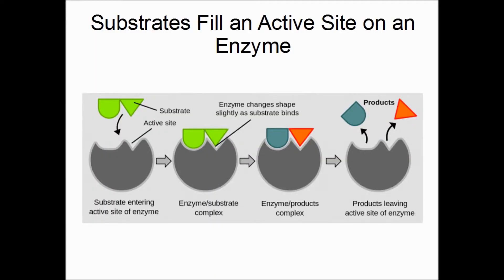Like many proteins, an enzyme works by changing shape. Once the substrate is bent just right, the enzyme responds to the bond by twisting or bending the molecule into an unstable state, where the covalent bonds are more likely to break. Once the bond is broken, the molecule will return to a more stable state.